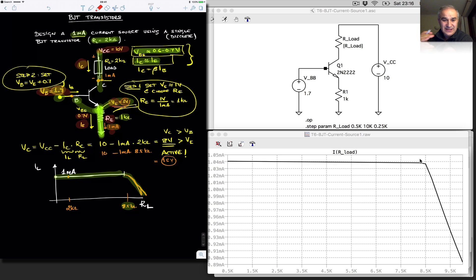We simulated and we saw that it worked. We got a stiff 1 milliamp voltage source, all the way to 8.5k, at which point the collector voltage has a drop of 8.5 volts, and the transistor is no longer in the active region.